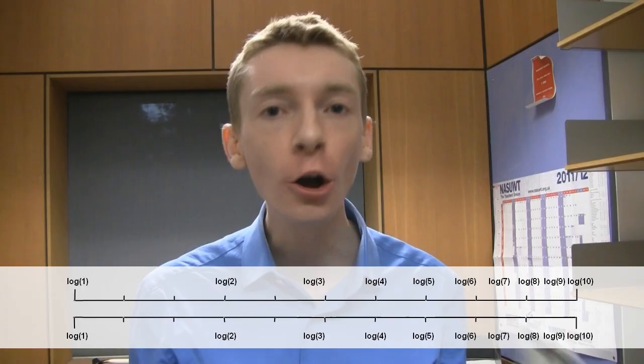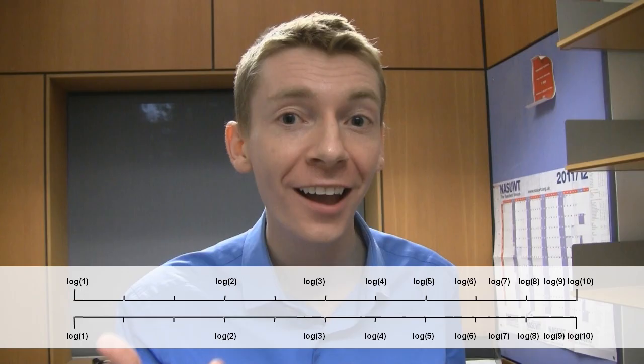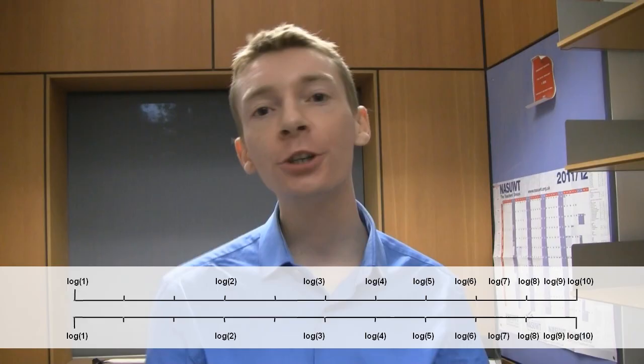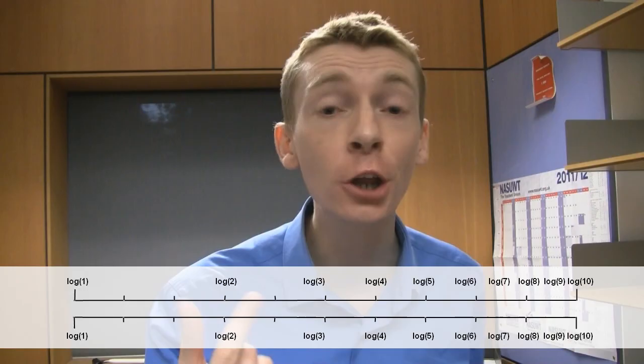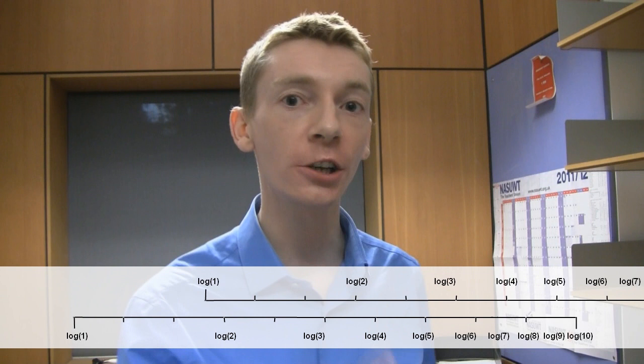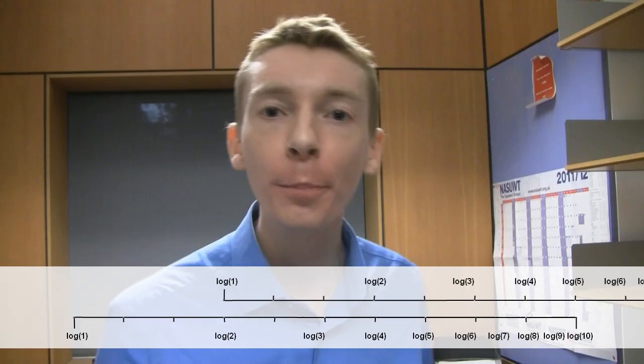So, imagine we've got two log scales. Notice the log scales are not uniform — there's a large gap between log 1 and log 2, but only a small gap between log 8 and log 9. Let's say I want to do 4 times 2. I'm going to add the logs together — log 4 plus log 2. What I can do is slide the top scale across to the right by log 2, and that will add log 2 to everything. So log 4 plus log 2 is log 8. I then reverse the log process to get the final answer: 8.